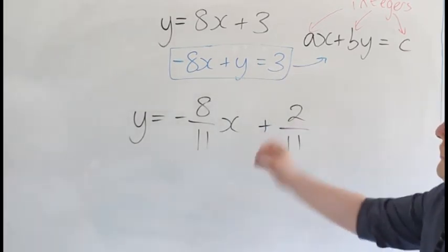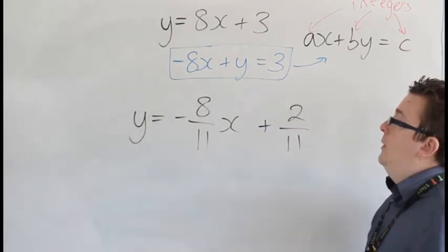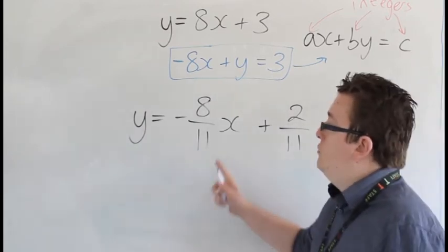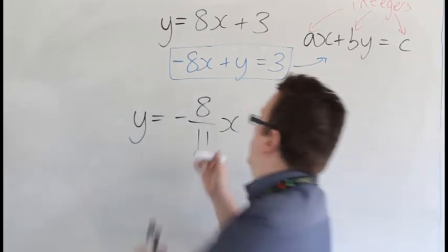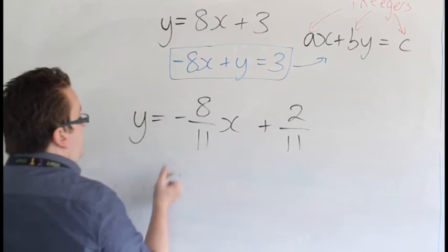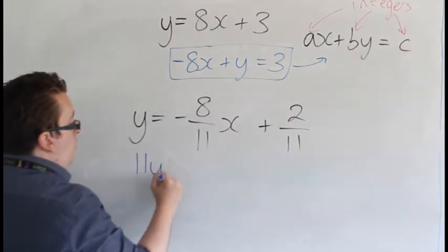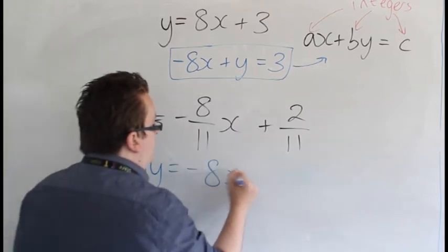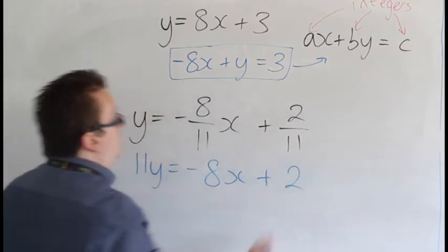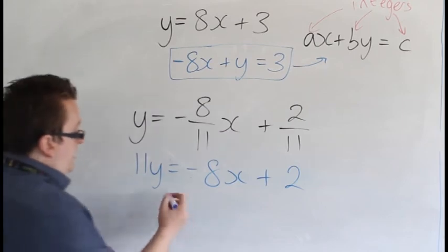So the step that you should get used to is multiplying all the way through by this 11. So if you multiply through by 11, that gets rid of the fractions here and here. So you get 11y is equal to minus 8x plus 2, and then you can add 8x to both sides.